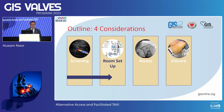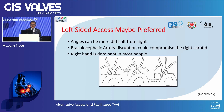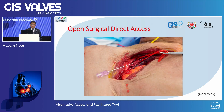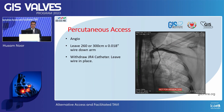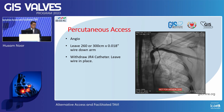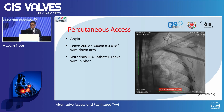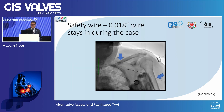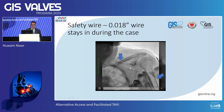You need to screen patients, set up your room, then perform access and closure. Typically the left side may be preferred because the angles can be more difficult from the right. For open surgical access, surgeons perform a cutdown, expose the artery, and access it. For percutaneous access, you take a JR catheter, inject on the left side, identify your landmarks, leave a safety wire down, and puncture according to your fluoroscopic reference — similar to what you do for transfemoral access. You keep the safety wire down and puncture at your sweet spot.